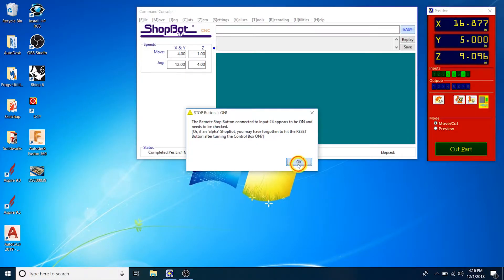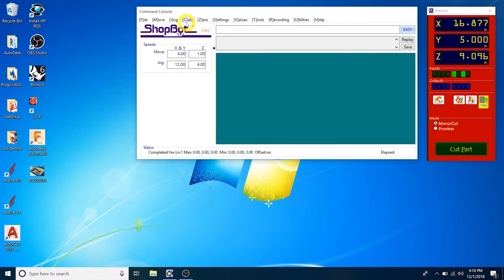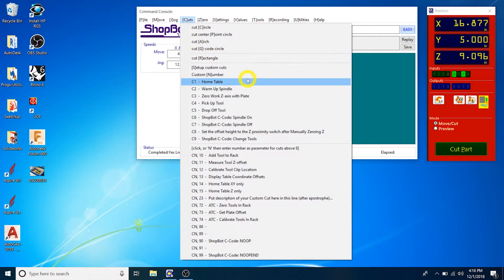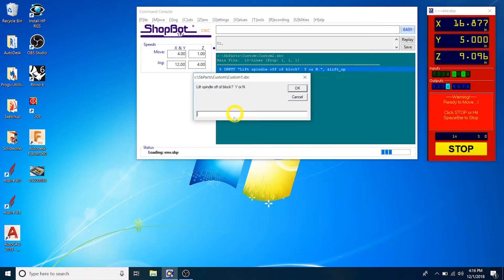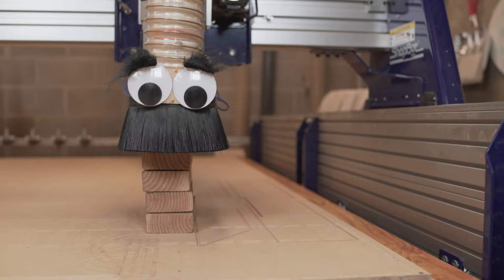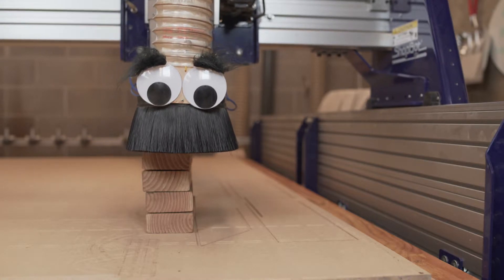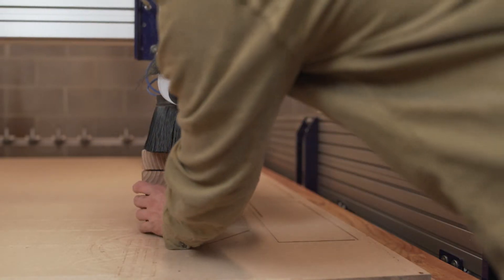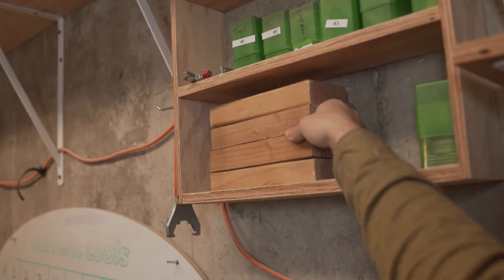To start the homing routine, go to the control software and select Cuts C1 Home Table. Type Y and hit enter to begin the routine. The spindle will lift off from the skirt block. Grab the block and place it out of the way.